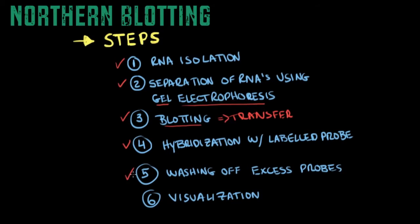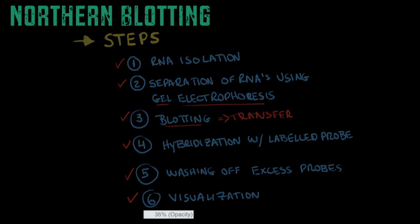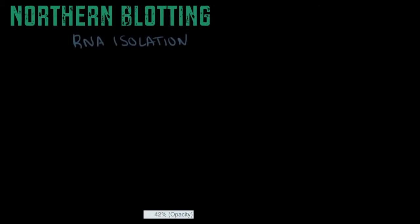On the fifth step, it's simple — you're just going to wash off the excess probes. And on the sixth and last step, it's visualization — you need to actually see with the naked eye where the RNA molecules that you're trying to target using northern blotting are. Now let's move on and talk about RNA isolation, which is the very first step.